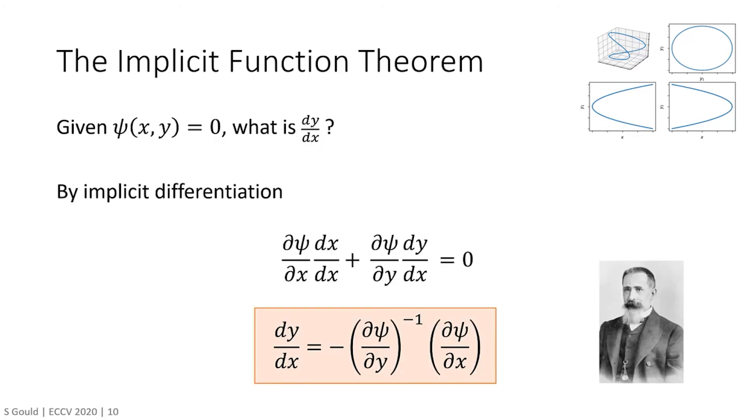Its origin can be traced back to the works of Descartes, Leibniz, Bernoulli and Euler. Cauchy was the first to place the theorem on rigorous mathematical grounds, and it was Dini, shown here, who first presented the theorem in its modern multivariate form. By implicitly differentiating psi of x comma y, we arrive at the equation dy/dx equals minus the inverse of d psi/dy times d psi/dx.